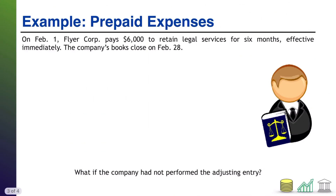Let's do an example. On February 1st, FlyerCore pays $6,000 to retain legal services for 6 months, effective immediately. The company's books close on February 28th. So our original entry on February 1st is that you paid $6,000 — credit cash $6,000, asset down — to retain legal services for 6 months effective immediately. So somebody now owes you $6,000 worth of legal services, and we're going to call this prepaid legal, $6,000. That was our journal entry on February 1st.